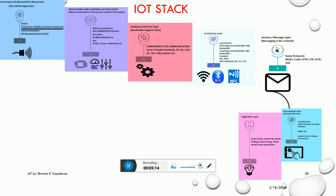Layer seven is the application layer. Now that I have everything available I can build a smart home, a smart city, smart parking, smart energy, smart agriculture, smart water, or smart retail. Whatever you are going to build — that is the application layer, layer seven.